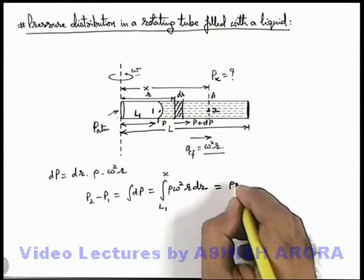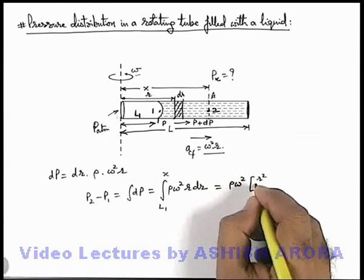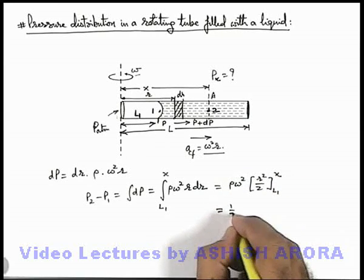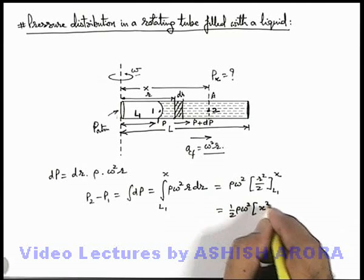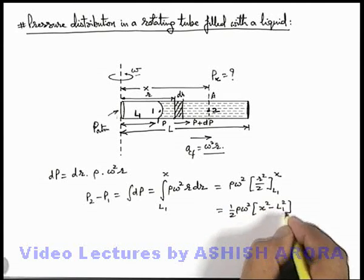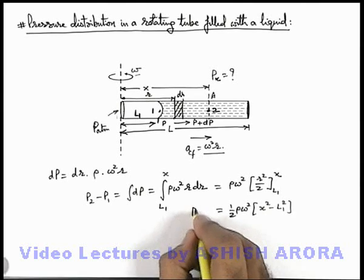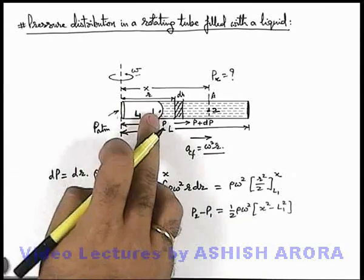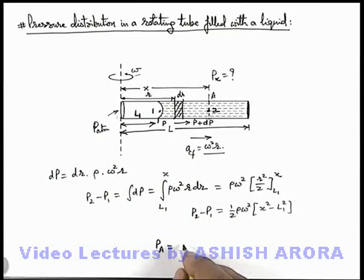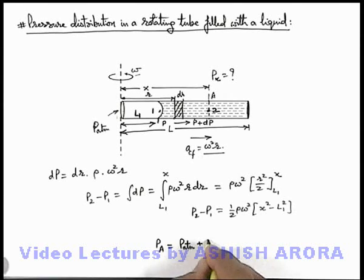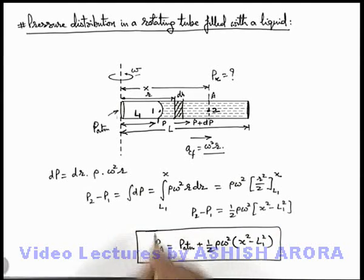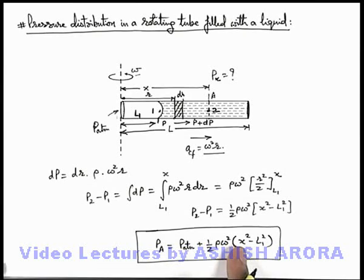If we integrate, we get ρω²·r²/2 with limits from l₁ to x, which gives us (1/2)ρω²(x² - l₁²). So this is the pressure difference p₂ - p₁. The pressure at point A can be given as: at point 1 the pressure is p_atmospheric, so it equals p_atmospheric + (1/2)ρω²(x² - l₁²). This is the relation we can develop.